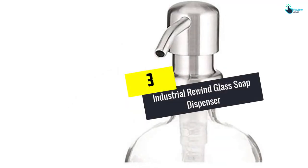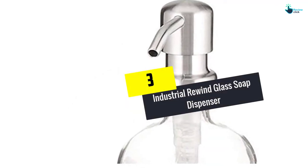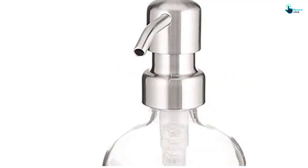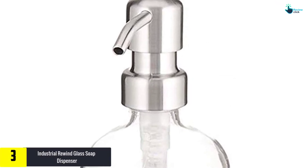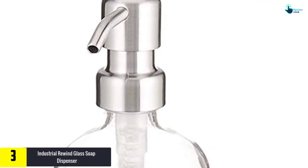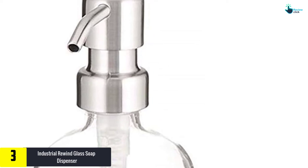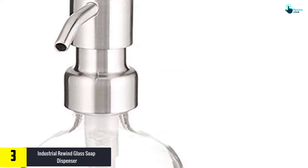At number 3, we have the Industrial Rewind Glass Soap Dispenser. A messy countertop will be a thing of the past with this soap dispenser. Consisting of a clear glass jar and a stainless steel pump, it is perfect for soap, dish soap, lotion, and shampoos.